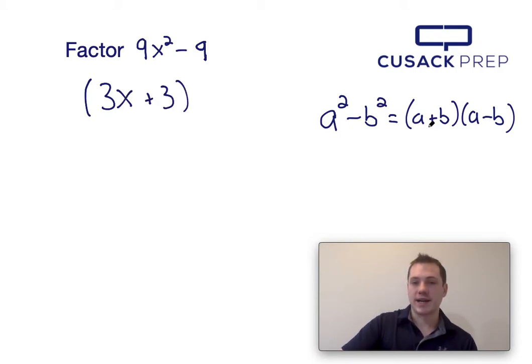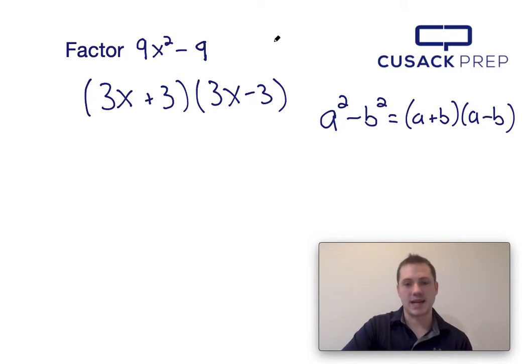So plugging into the right-hand side of this equation, I find that 3x plus 3 times 3x minus 3 is what I get for 9x squared minus 9 when I factor it.